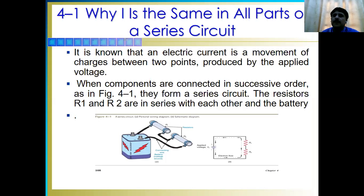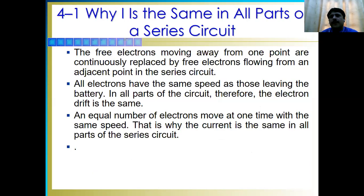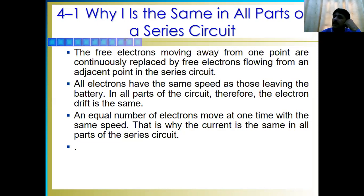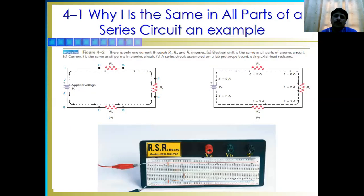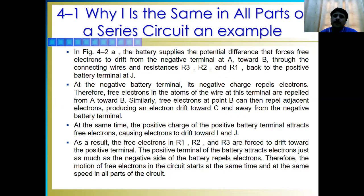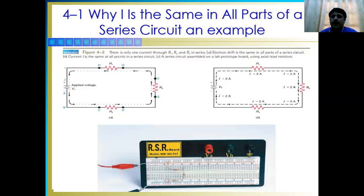The question arises: why does current remain the same in series? Three electrons continuously replace the three electrons flowing from each point in the series. Electrons have the same speed as those leaving the battery in all parts of the circuit; therefore the electron drift is the same, the flow is the same, the movement is the same. An equal number of electrons passes any one point at one time with the same speed — that is why the current is the same in all parts of the series.